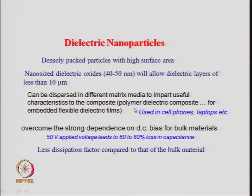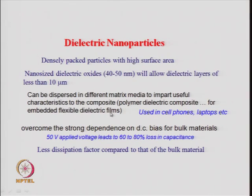You can make a composite like a polymer–dielectric composite, and because of the polymer it will have flexibility. You can then make what are called flexible dielectric films or embedded flexible dielectric films, where the dielectric nanoparticles are embedded within a polymer film. Such flexible films are of great importance in flexible electronics — especially in cell phones and laptops.